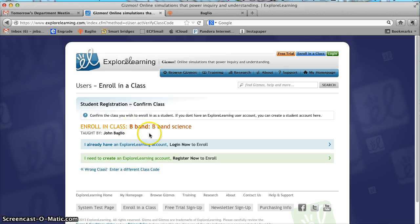I'm in the process of enrolling in the B-Band class. I could either click I already have an explorelearning account or I need to create an explorelearning account. In all of your cases you will probably need to create an explorelearning account so click the green bar.